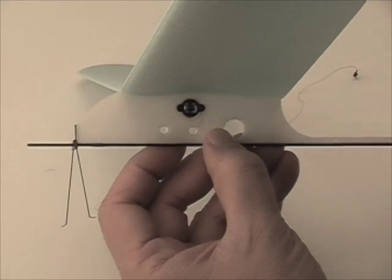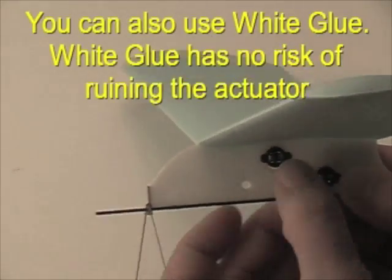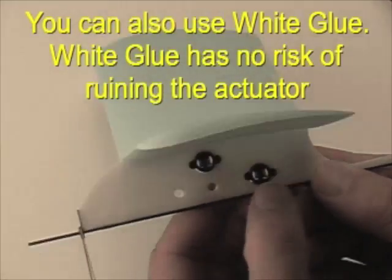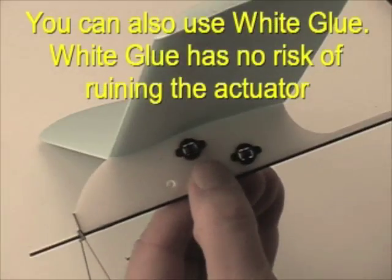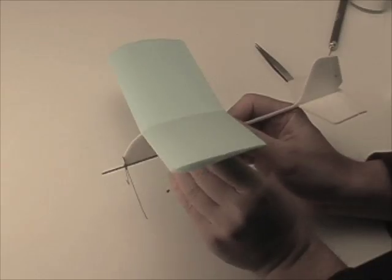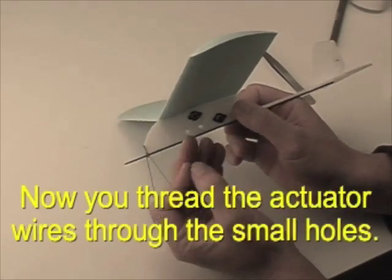The tabs on the actuators should be glued down with a small drop of medium or thick CA glue, or you can use white glue. Make sure you use kicker so there's no risk of the CA glue wicking into the actuator and ruining it.